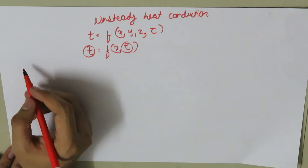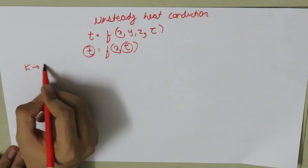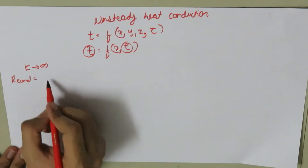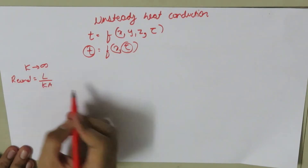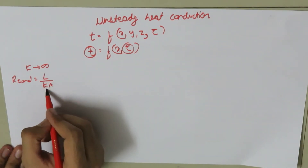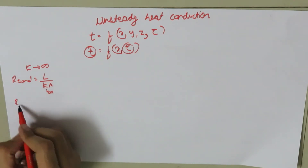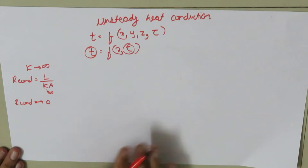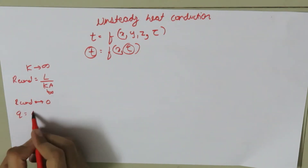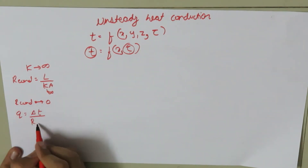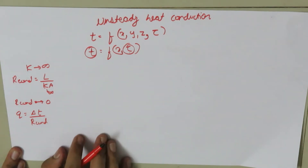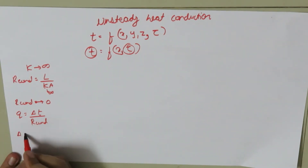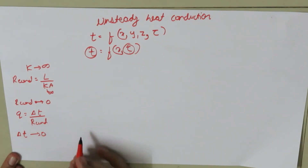If the thermal conductivity of this substance is very high — if k tends to infinity — then we know that resistance due to conduction is equal to L/kA. So if k is infinity, the resistance due to conduction is zero. And since Q equals the change in temperature divided by resistance, if resistance tends to zero then the change in temperature will also tend to zero.